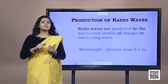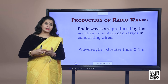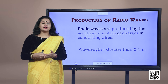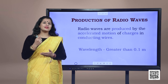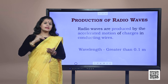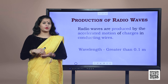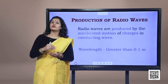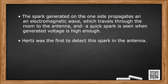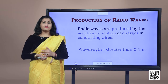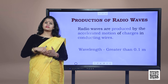When the ignition takes place, Hertz noticed that in the antenna there would be an ignition of a hundredths of a millimeter, so you can't see it very clearly. He had to darken the room and use a microscope to look at this point and notice whether there was ignition or not. The spark generated on one side propagates an electromagnetic wave which travels through the room to the antenna, and a quick spark is seen when generating voltage is high enough. Hertz was the first to detect this spark at the antenna, and at the end of 1888 he wrote a famous paper demonstrating that Maxwell was right.